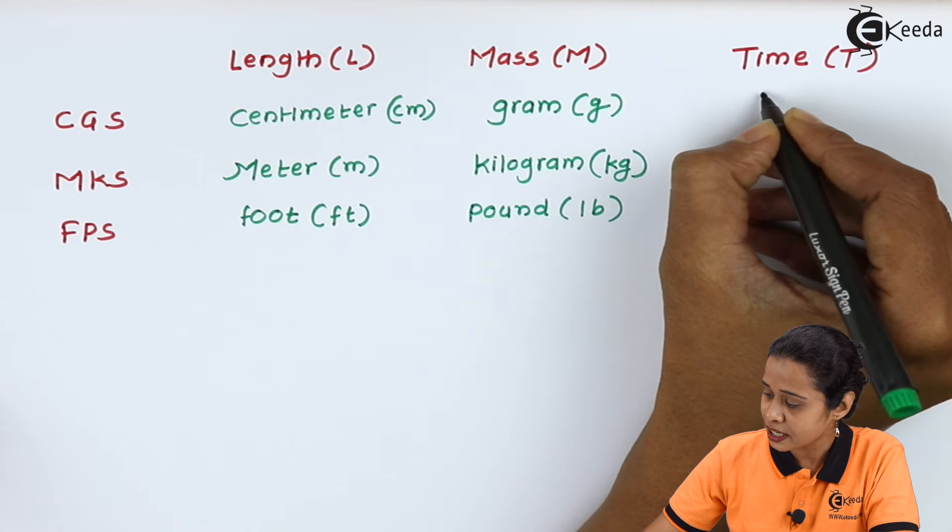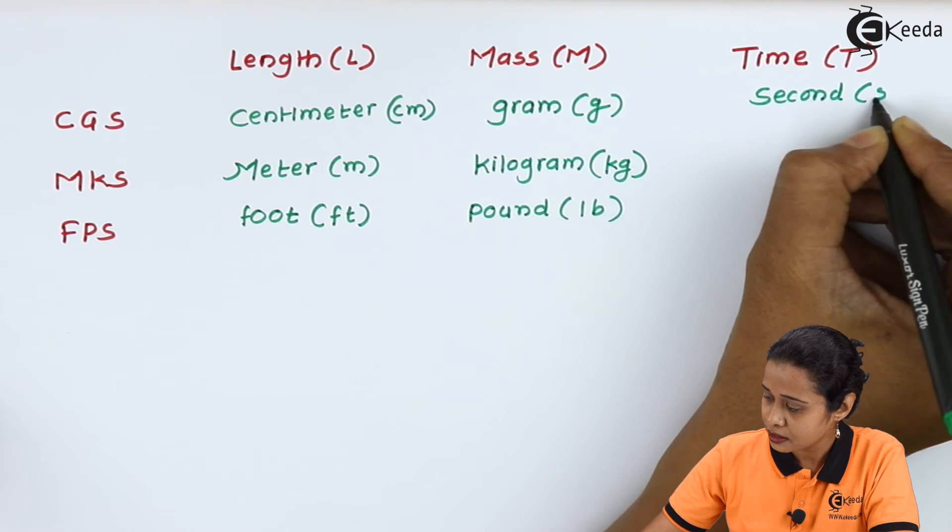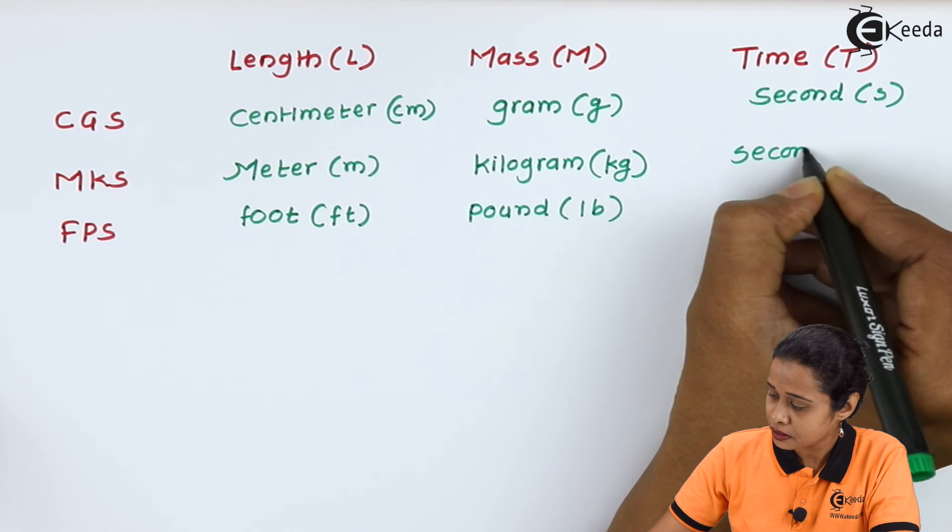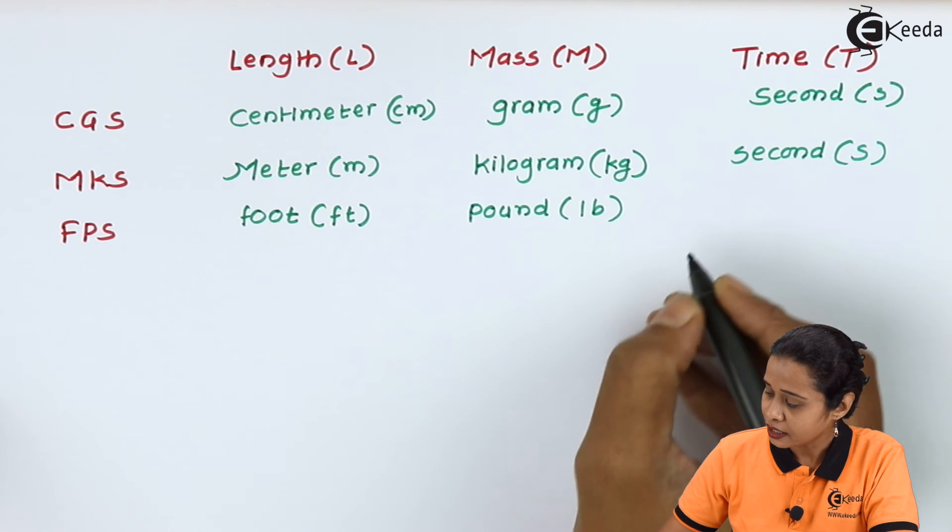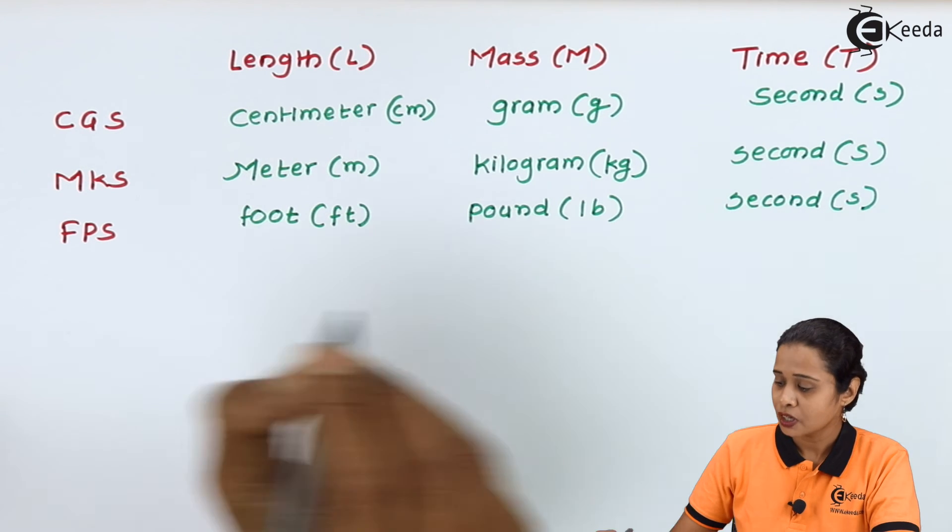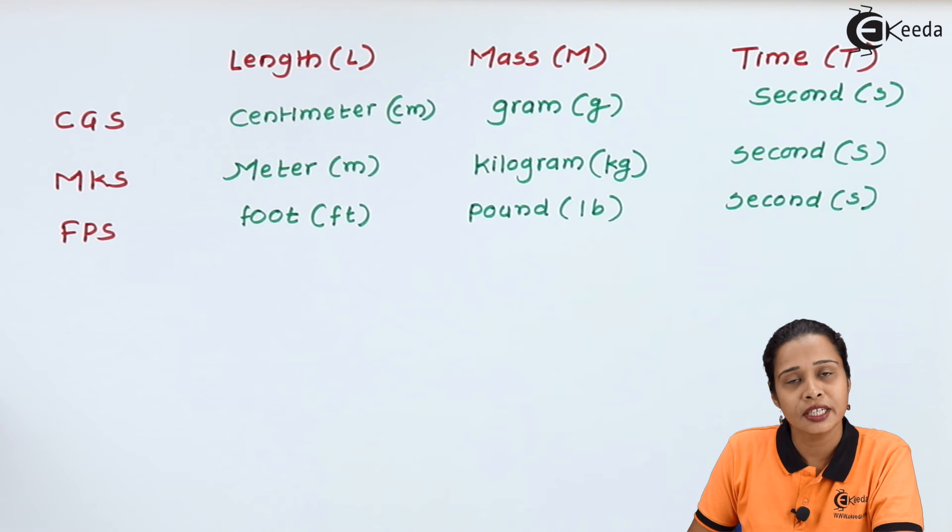In case of CGS, we express time in seconds. In MKS also, seconds. And in FPS also, seconds.